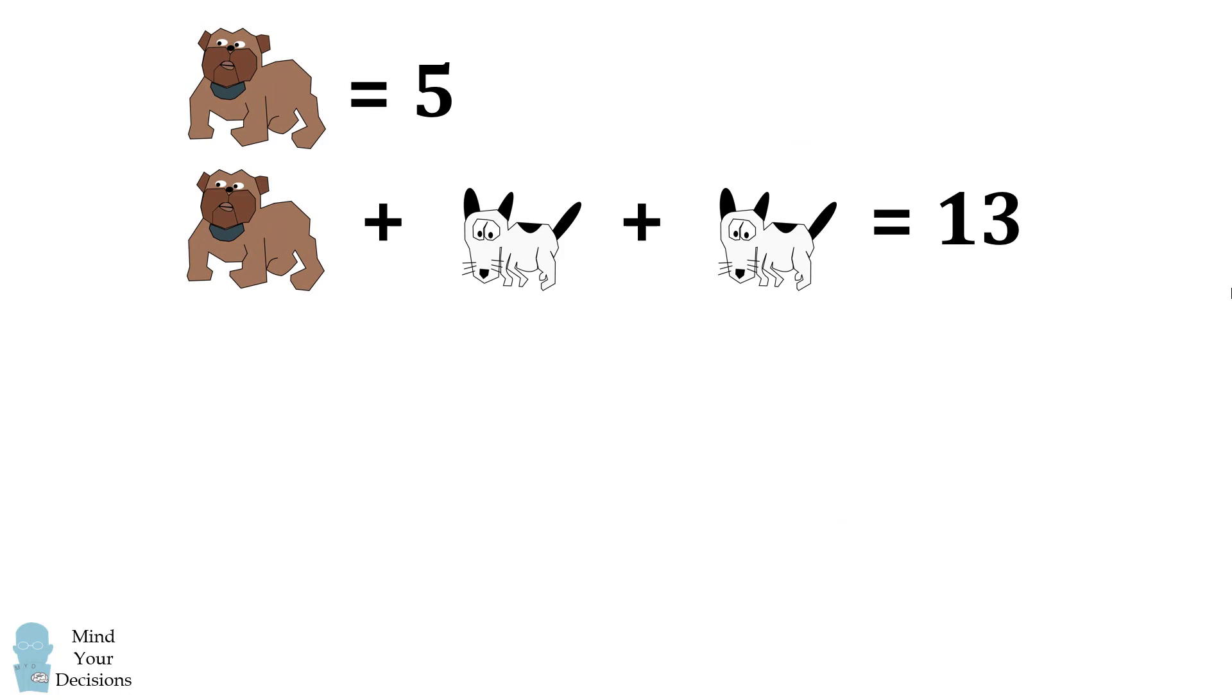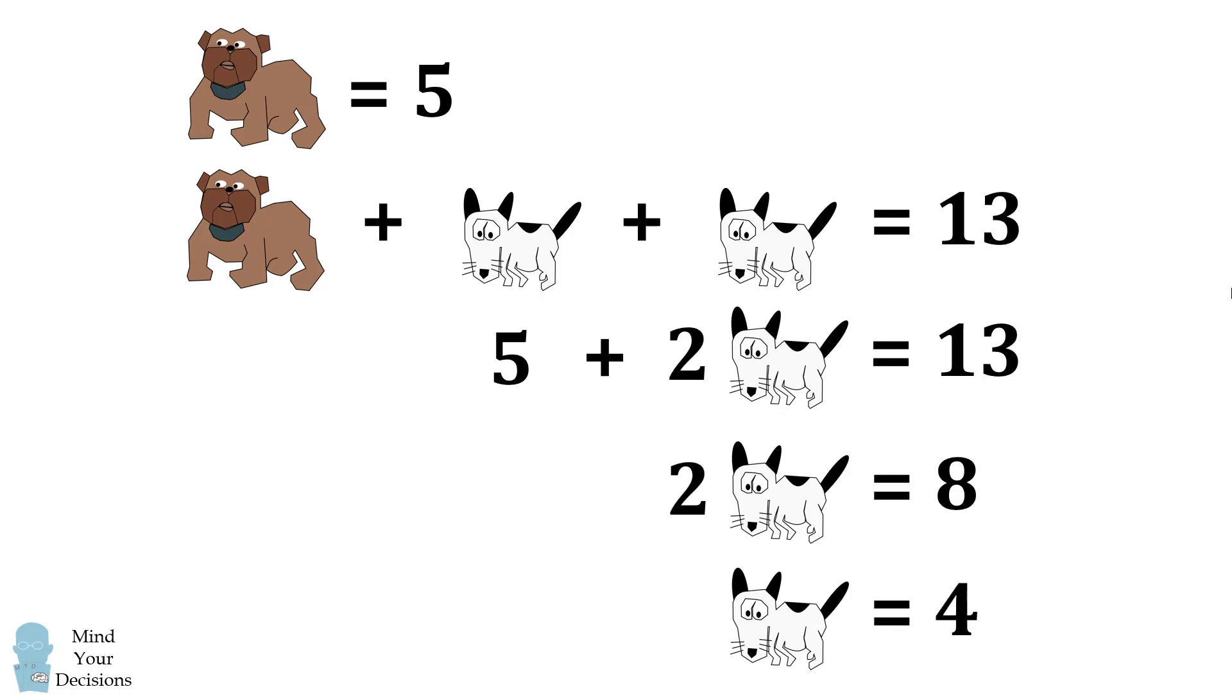In the next equation, we can use the value of five for the bulldog and then solve for the value of the two black and white dogs. We have five plus two black and white dogs is equal to thirteen. This means two black and white dogs are equal to eight, so one black and white dog is equal to four.